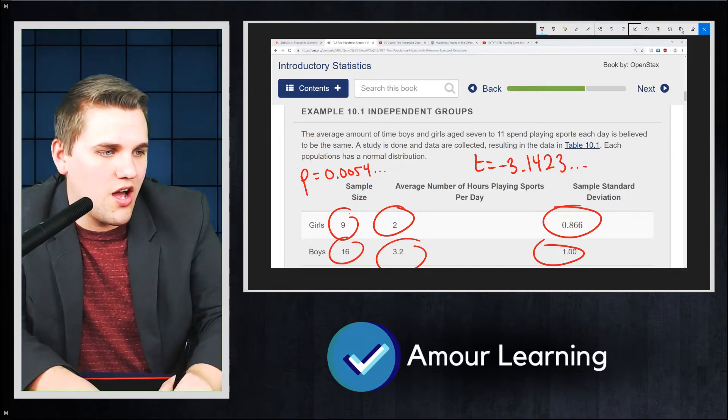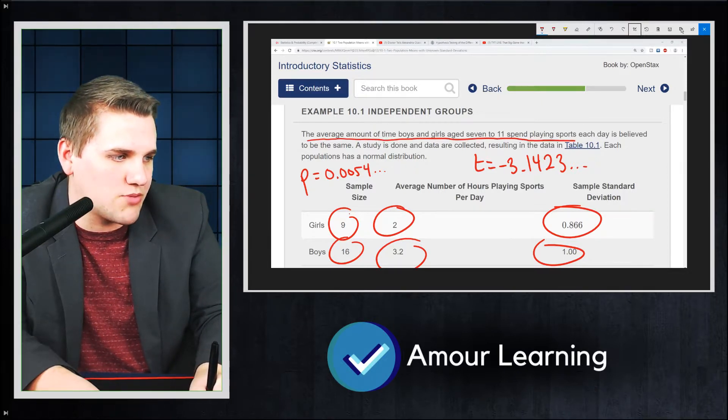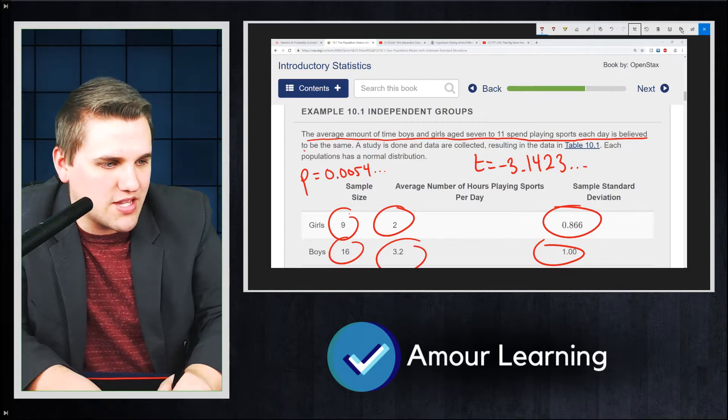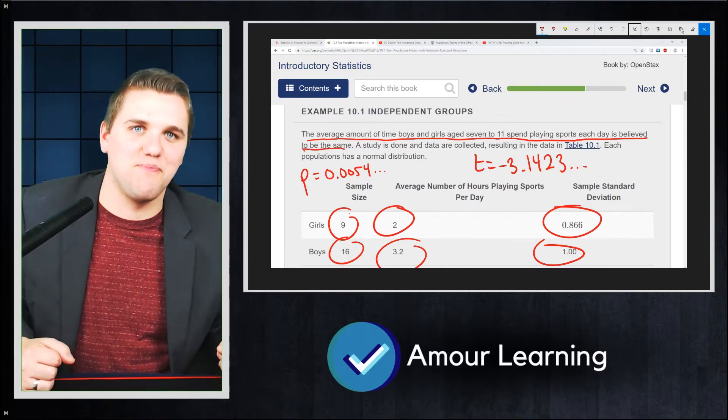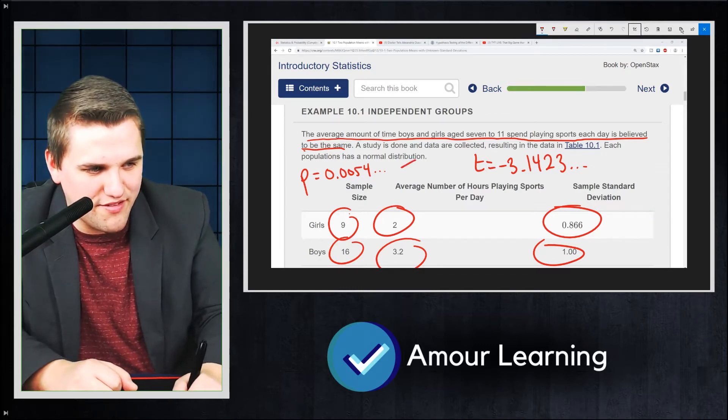That the average amount of time boys and girls aged 7 to 11 spend playing sports each day is believed to be the same. Well, they're not the same, because I just showed you. P-value is less than 0.05, right there.